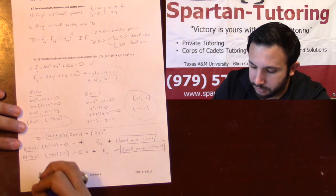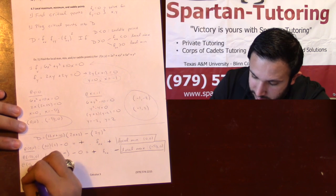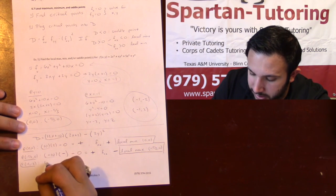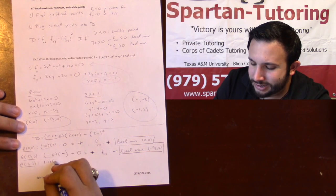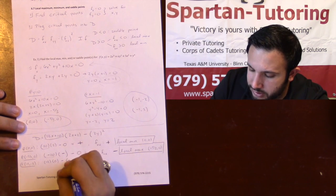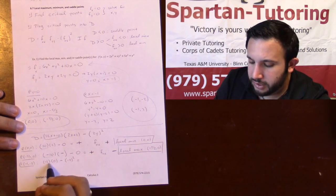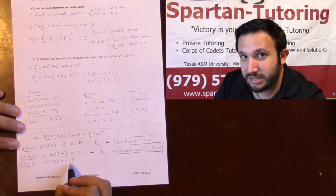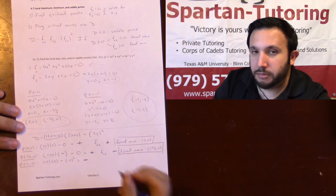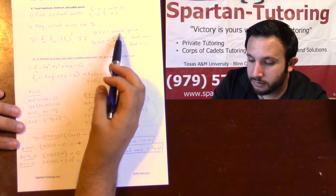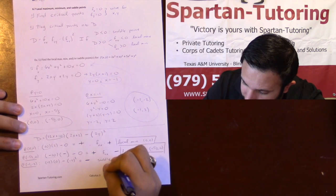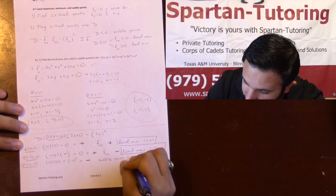At the point (−1, −2): plugging into D — fxx times fyy gives (−2)(0) equals zero, since −2 plus 2 is zero. Then minus fxy squared: plugging −2 into 2y gives −4, and squaring gives 16, so D equals 0 minus 16 equals −16. Since D is negative, we have a saddle point at (−1, −2).